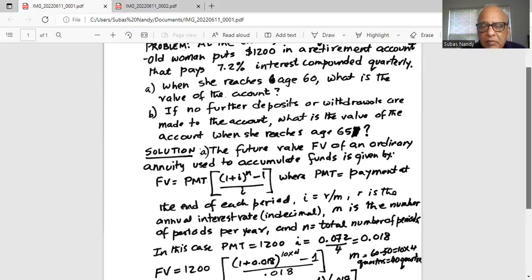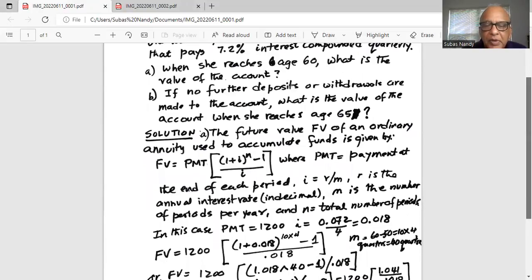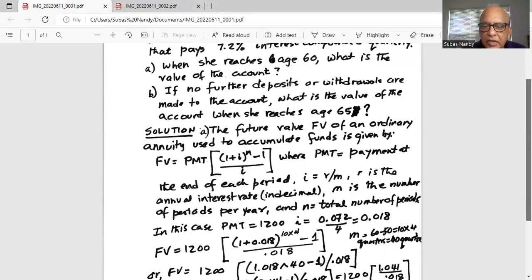Where PMT payment is the payment at the end of each period, I is the annual interest rate in decimal, M is the number of periods per year, and N is the total number of periods. In this case, payment PMT is $1,200, I, the annual rate of interest is 0.072, and it is compounded quarterly, so divided by 4, because our compounding period is 4 quarters in a year, so I is 0.018.